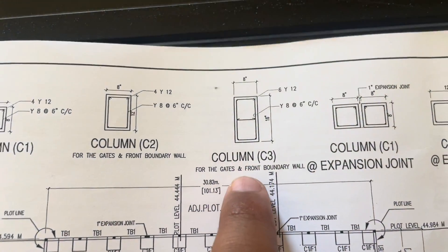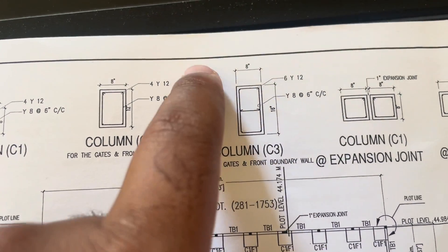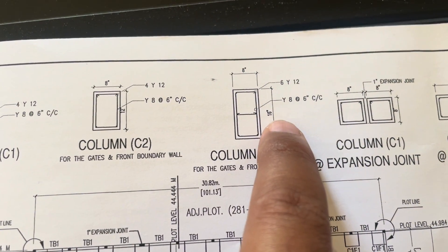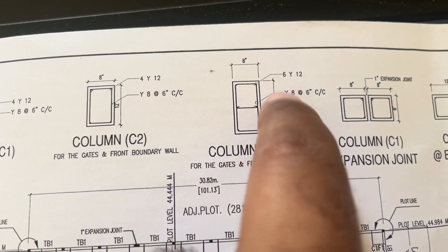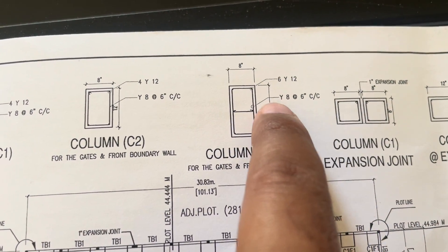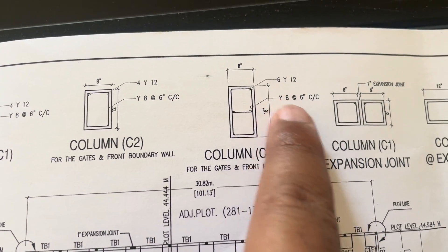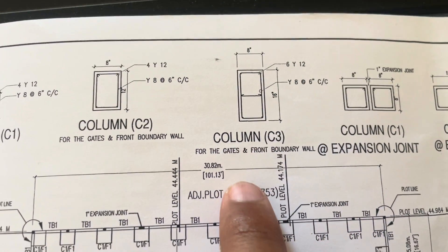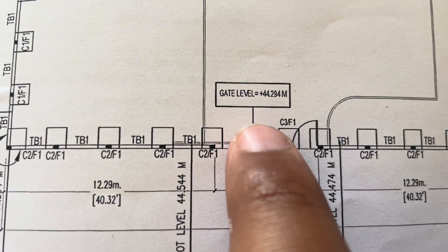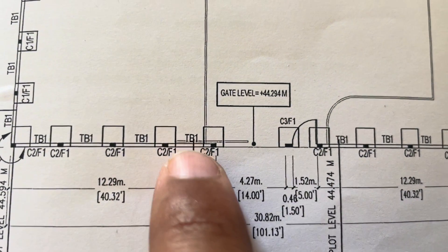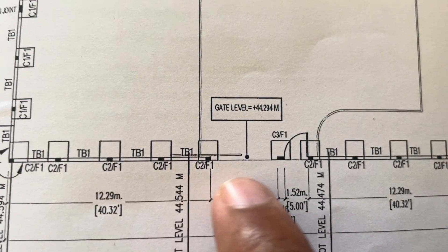C3 is used for the gate and front boundary wall areas. This column dimension is bigger — 16 inch by 8 inch — with 6 pieces of 12mm main bars and 8mm ties at 6 inch center to center. For the main gate and small gate we use C2 here, though the drawing labels C3 for F1. The same location and requirements apply for C2 and C3 placement.